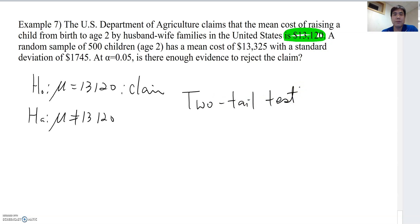Now I'm going to collect the known information and then start analyzing this hypothesis test. Read it carefully. Then we see N equal to 500, and then sample mean equal to 13,325, and standard deviation S equals sigma equal to 1745, and then given alpha 0.05.